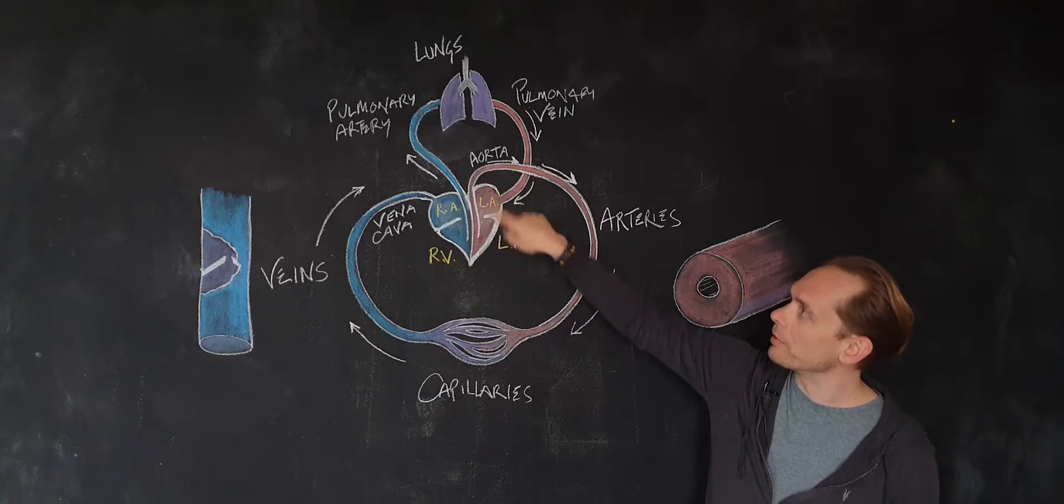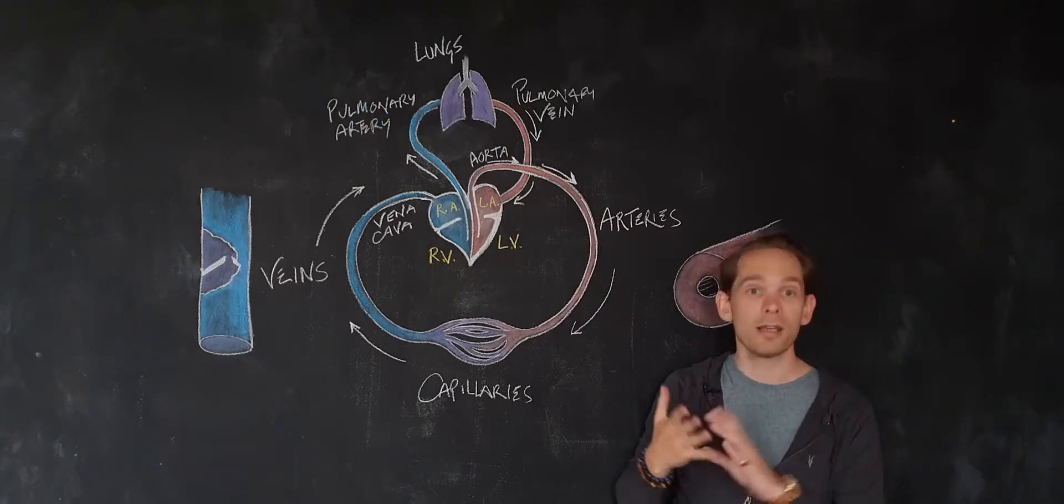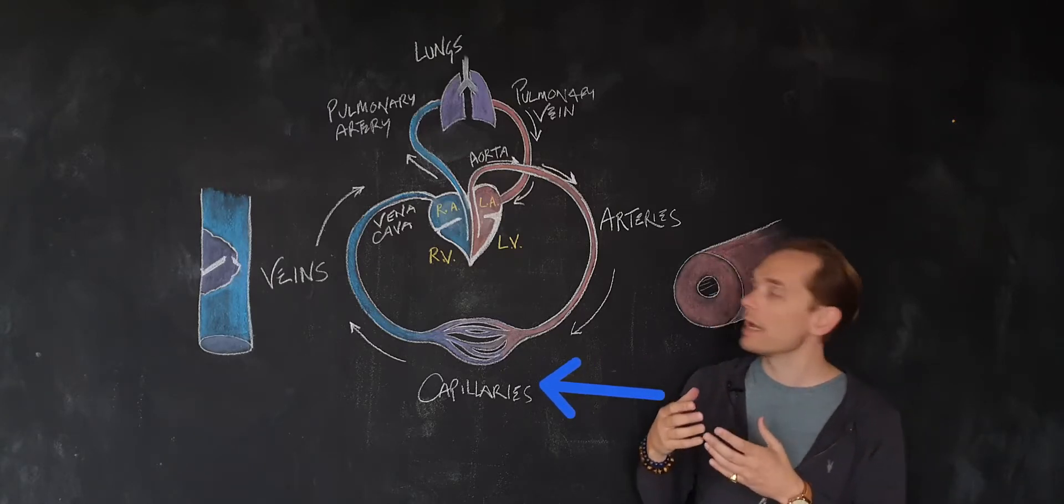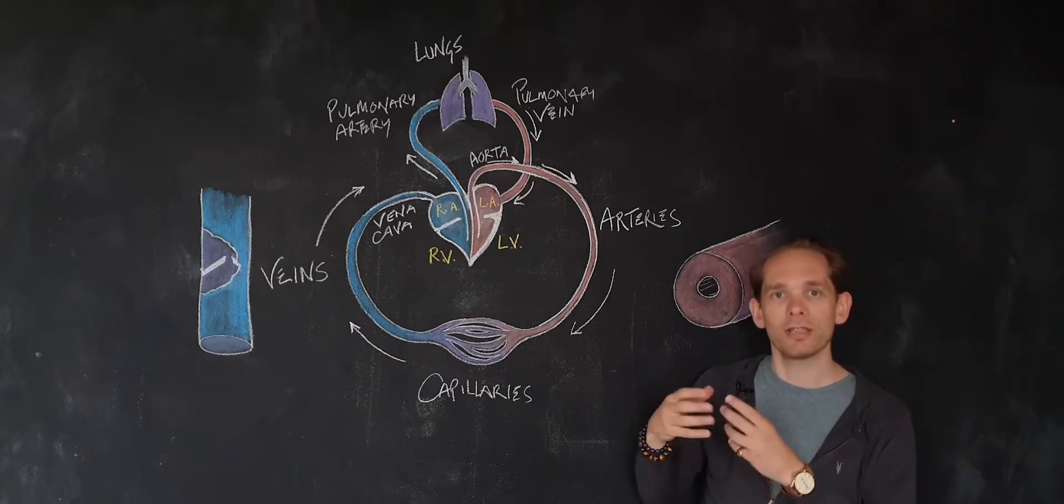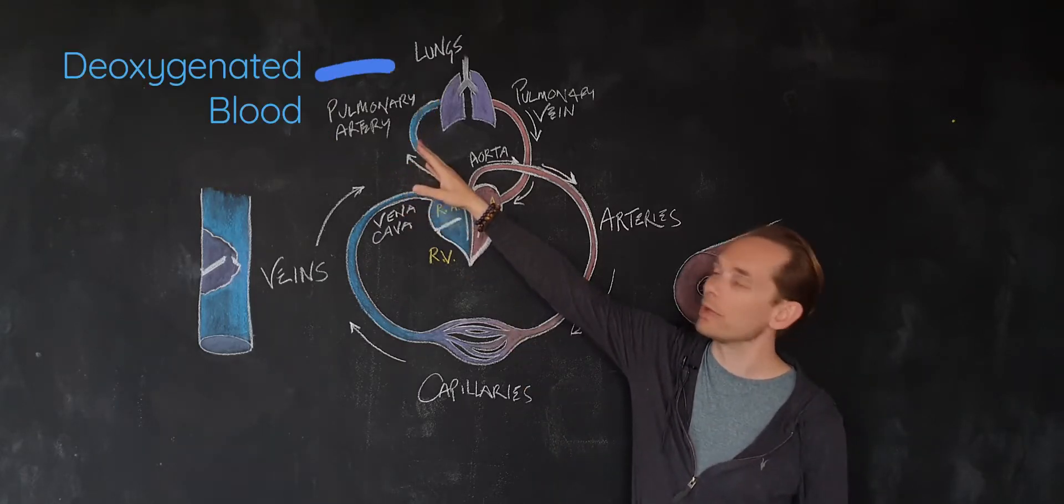And that pumps blood through the pulmonary artery to the lungs. So quick aside: arteries always carry blood away from the heart, and in every situation they are carrying oxygenated blood, apart from this one where it's taking deoxygenated blood. That's the pulmonary artery, the lung artery.